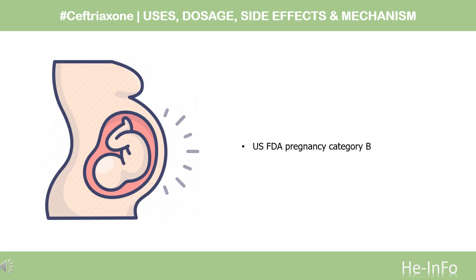Safety Advice. US FDA Pregnancy Category B: Animal reproduction studies have failed to demonstrate a risk to the fetus and there are no adequate and well-controlled studies in pregnant women. This drug should be used during pregnancy only if clearly needed and the benefit outweighs the risk.